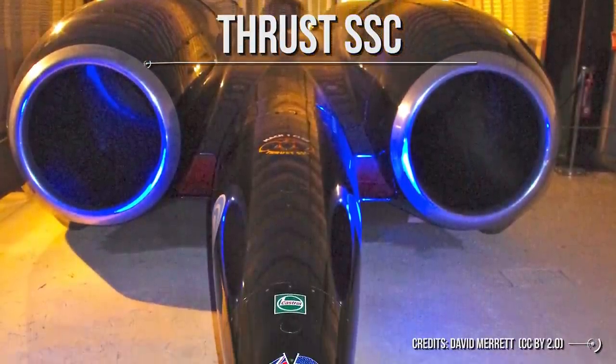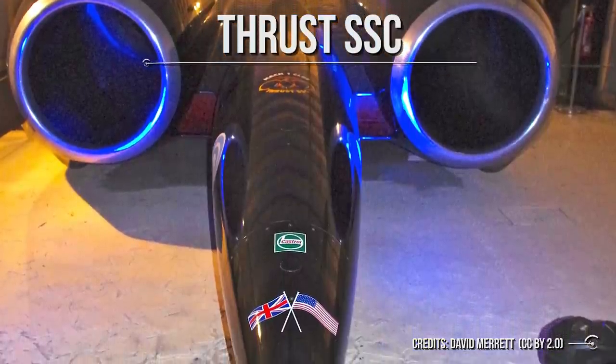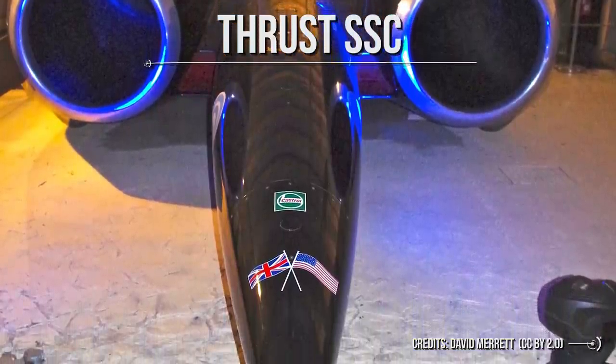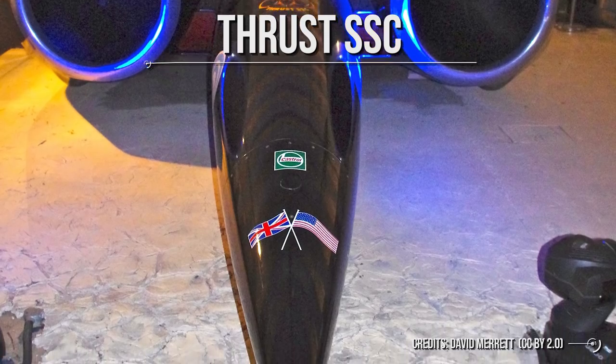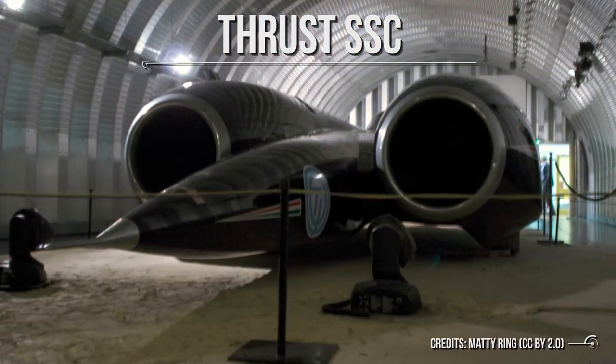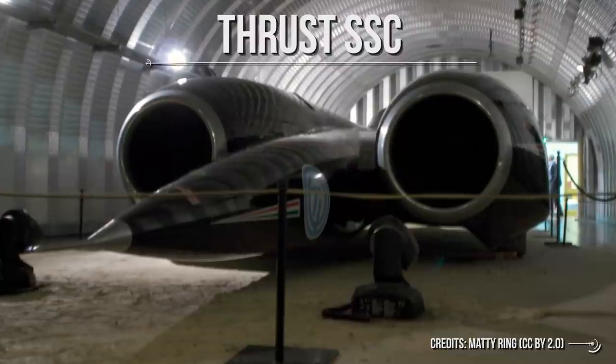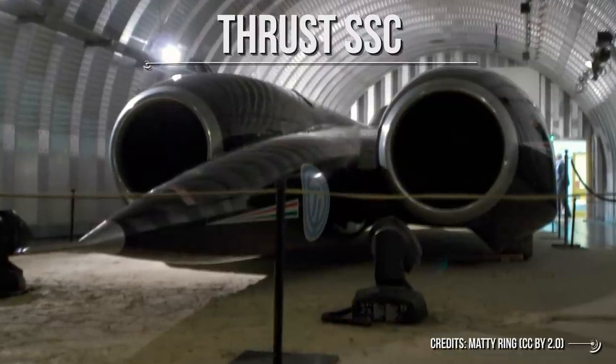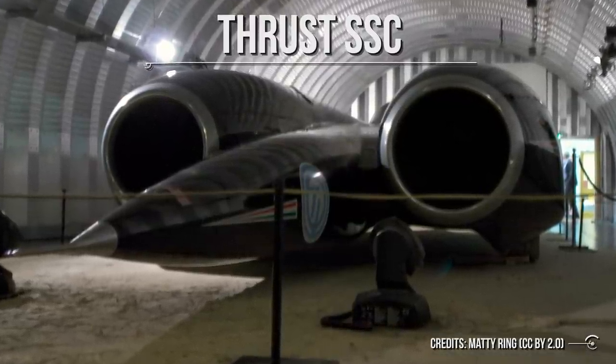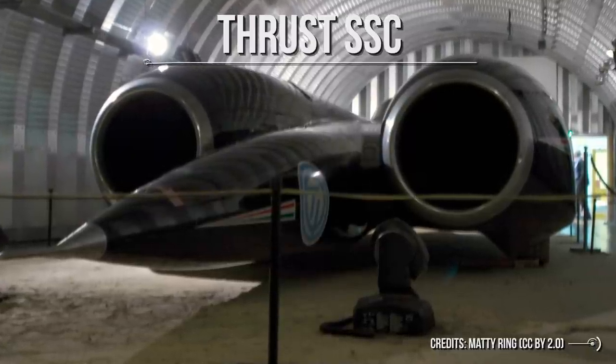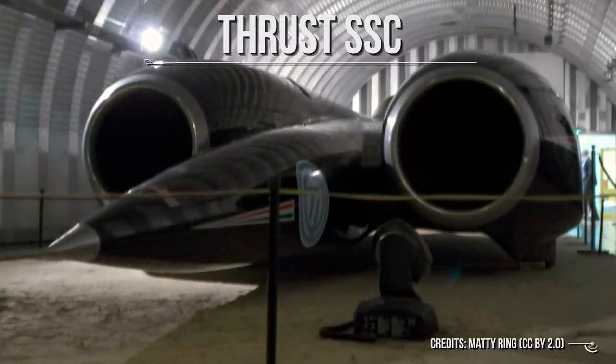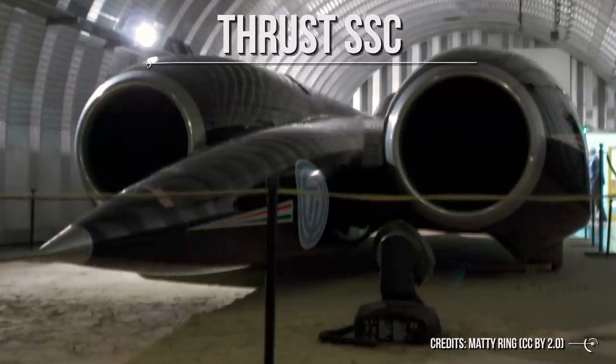Now imagine if the world's fastest land vehicle, the Thrust SSC, was set on an adventure from here to our own star. Even at its supersonic speed of 1,028 kilometers per hour, it would take around 14 years just to get there, meaning 28 years for a round trip. A baby could be born at its launch and become a fully grown office worker by the time it gets back. Traveling at light speed can do that with ease just around the time you finish this video. Let that craziness sink in.